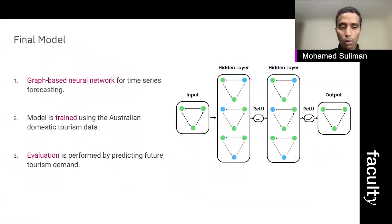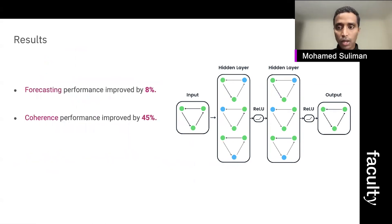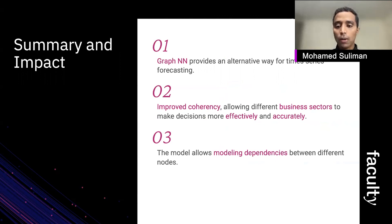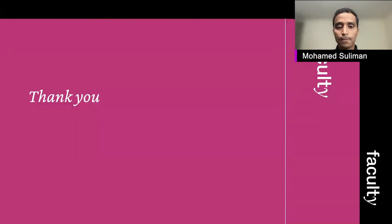Our final model is a graph-based neural network for time series forecasting. We trained our model using the Australian domestic tourism data and evaluated it by predicting future tourism demand. Our model showed an improved forecasting performance by eight percent and a coherence performance improvement by 45 percent. As a summary, we have proved that graph neural networks can serve as an alternative approach for time series forecasting, providing improved coherency that allows different business sectors to make decisions more effectively and accurately. The model also allows us to model dependencies between different nodes.